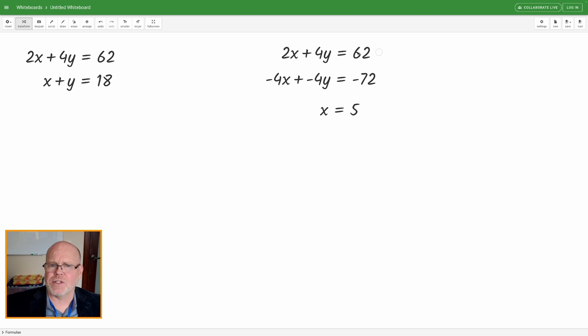So I'm just going to take that 2x plus 4y. I'm going to make a copy of it. I'm going to put it right here. And I'm going to substitute that 5 into the x. So I'm just going to grab the x and I'm going to drop it into the x. Notice the x highlights. And I'm going to let it go. So I've substituted 5 for that original x.